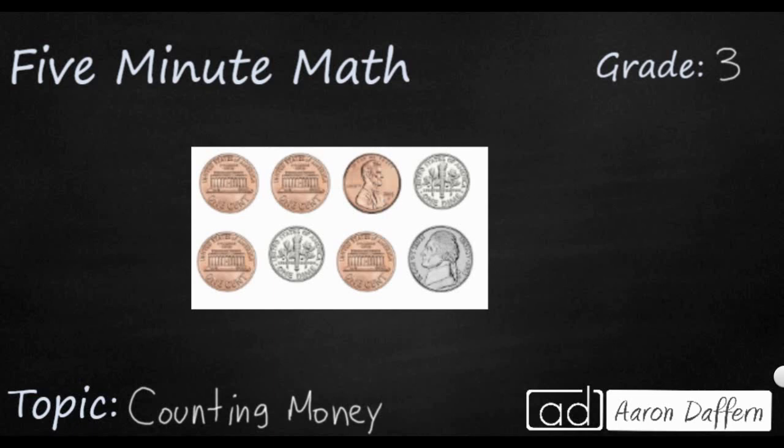So let's start simple. We have a collection of eight coins here and I'm just going to start labeling them so they're easy to remember. It says one cent on the back — this is one penny. It's got Abraham Lincoln on the front and the Lincoln Memorial on the back. So we've got five cents right there.